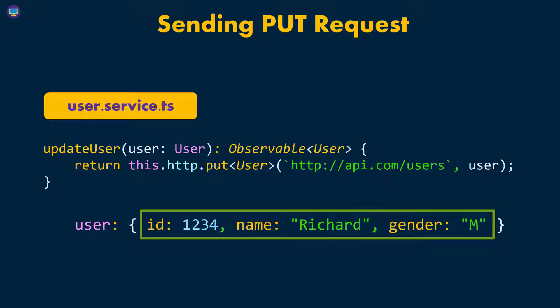So if we don't do that — meaning if we don't pass in all the properties of that specific user — then everything we don't pass will be set to the default value. For instance, if your backend is using Java and you didn't pass the gender, which is a string in Java, the default value of a string is null. So null will be saved in the database.